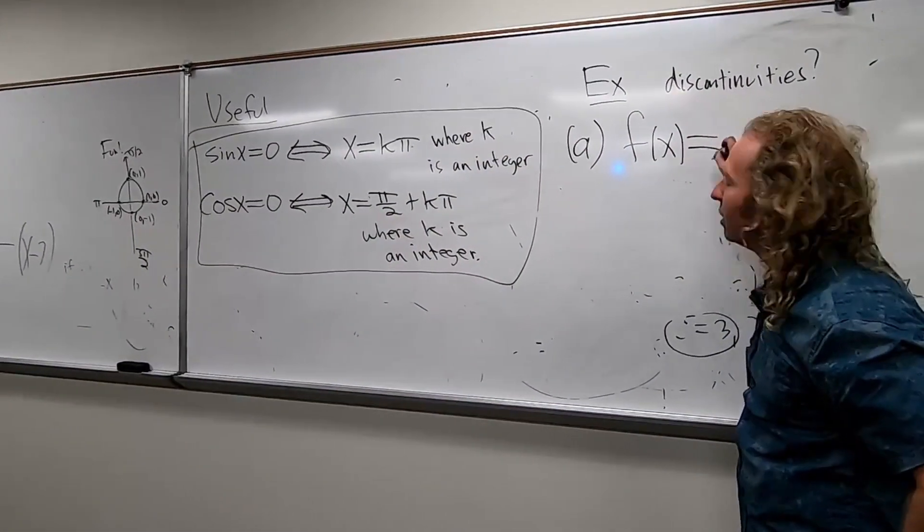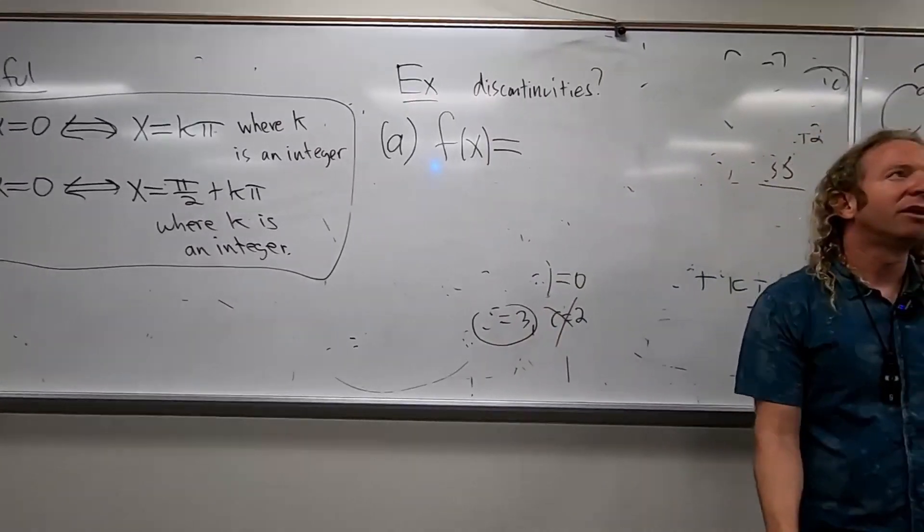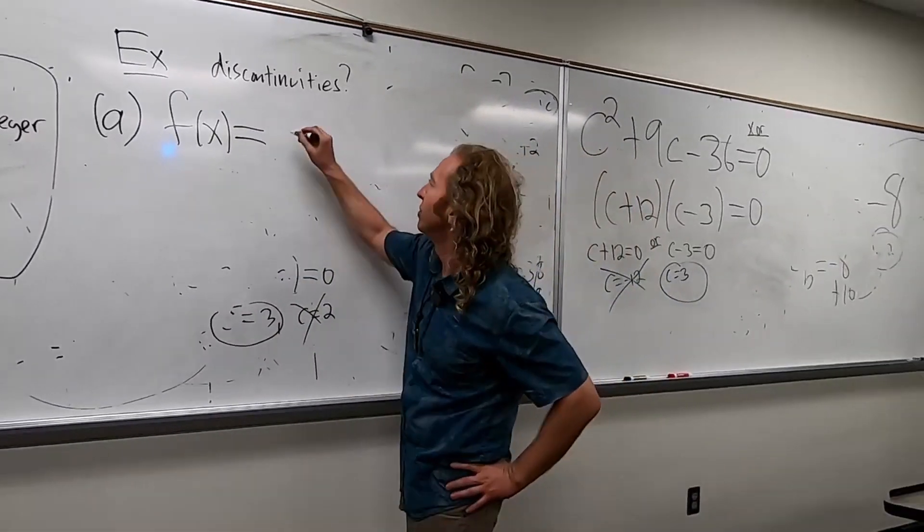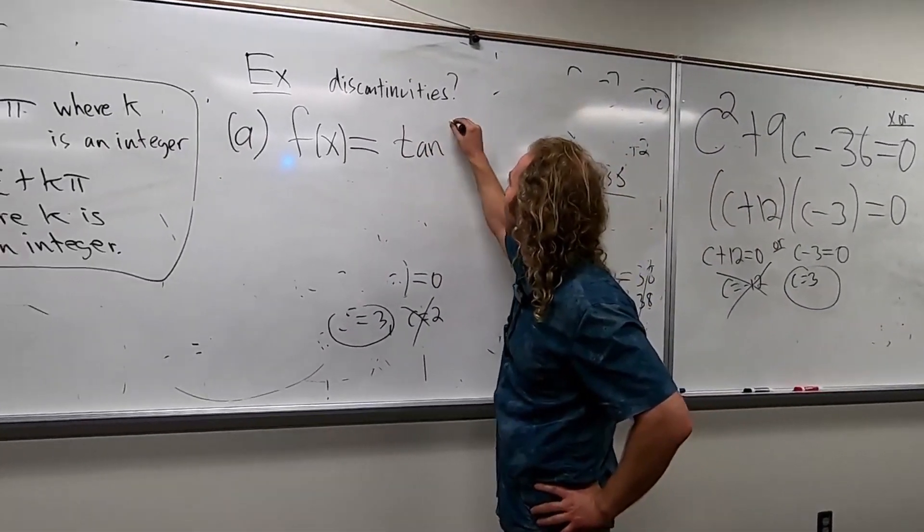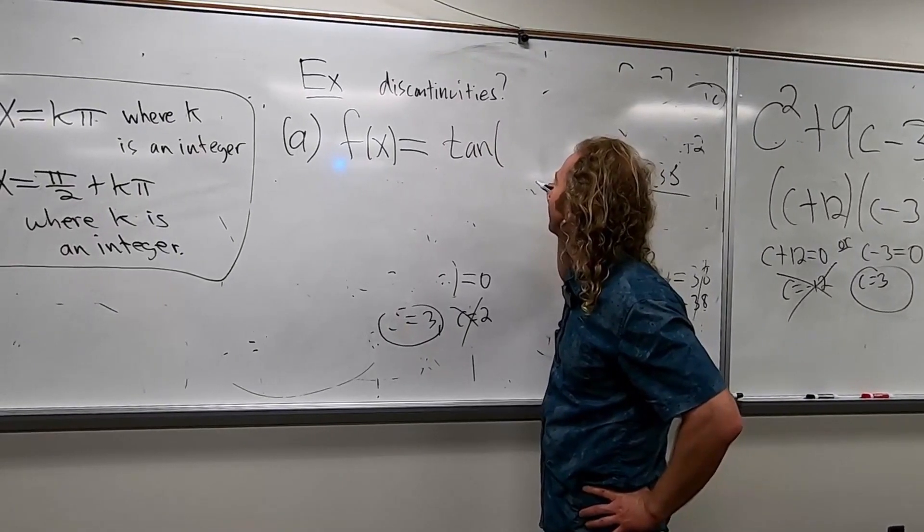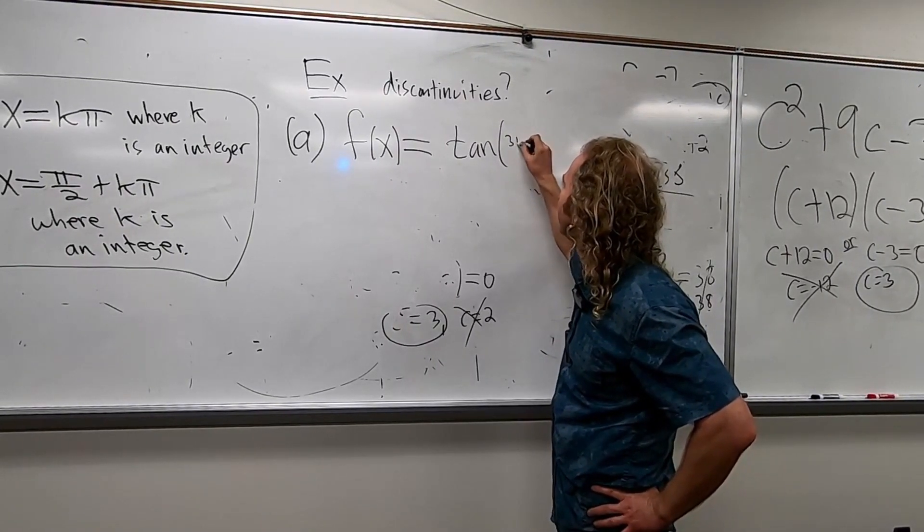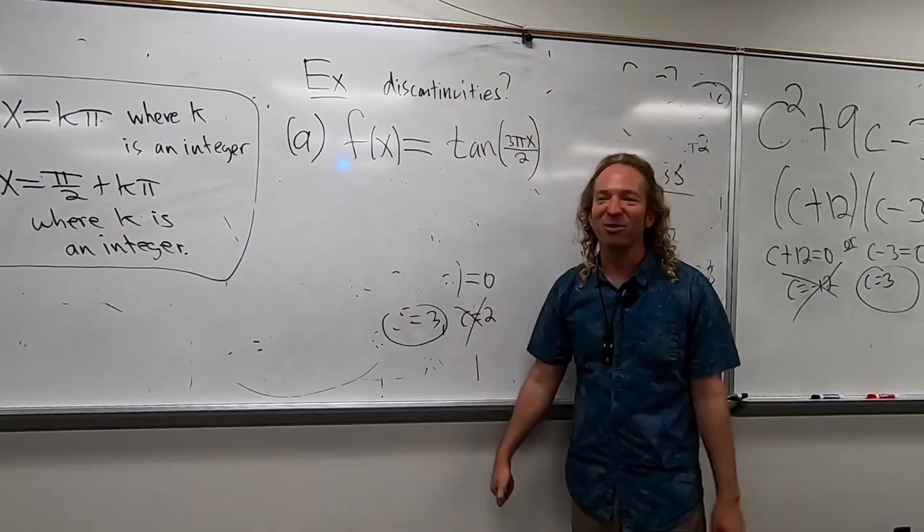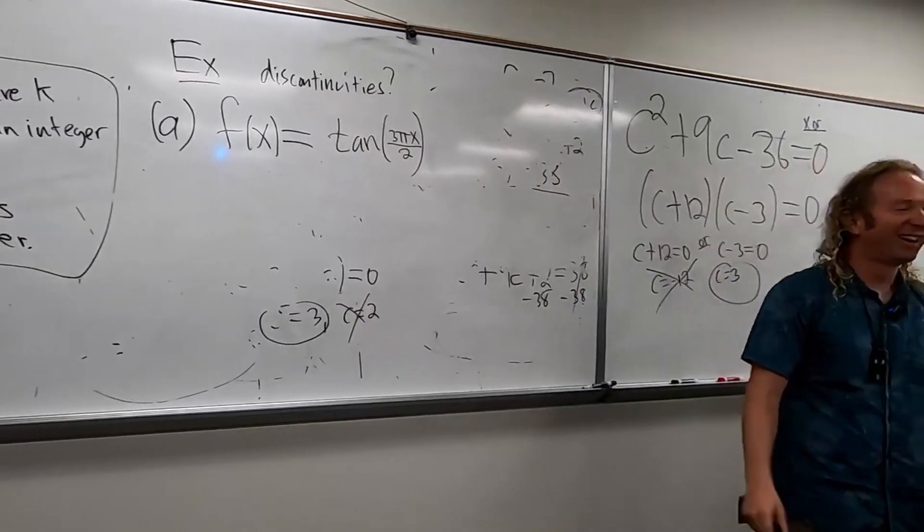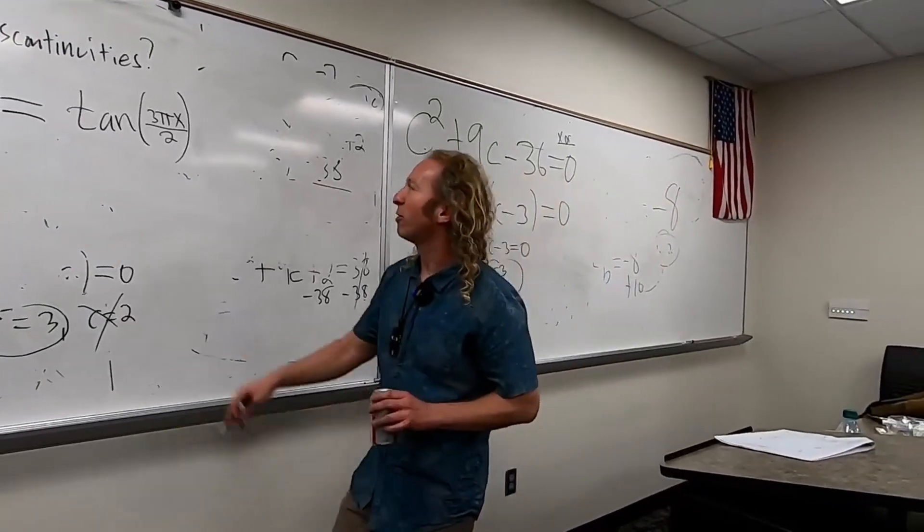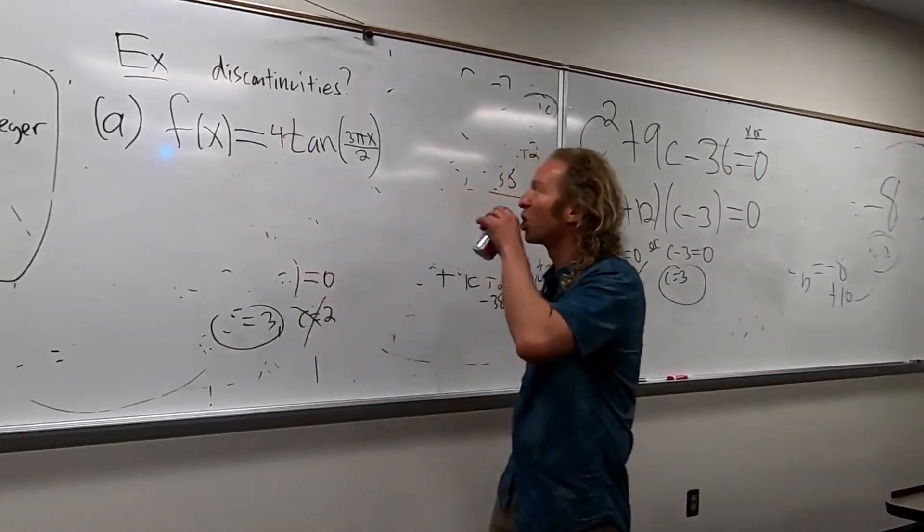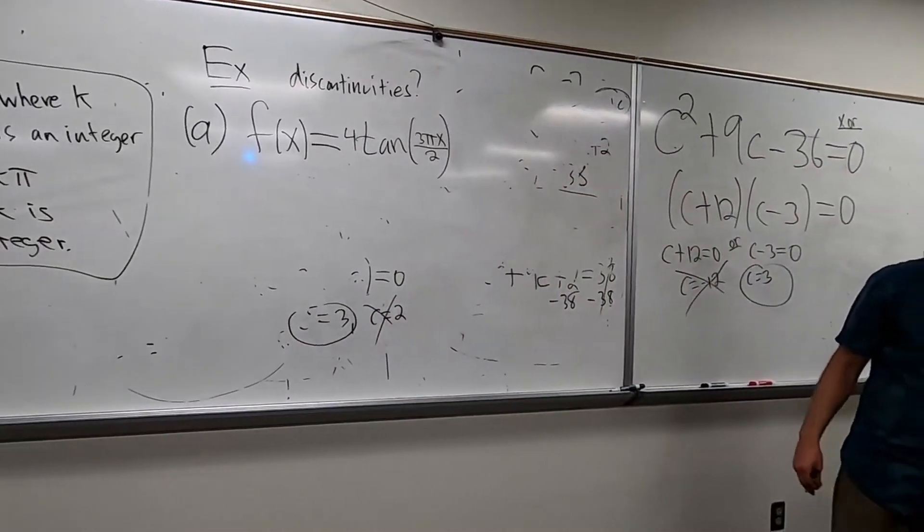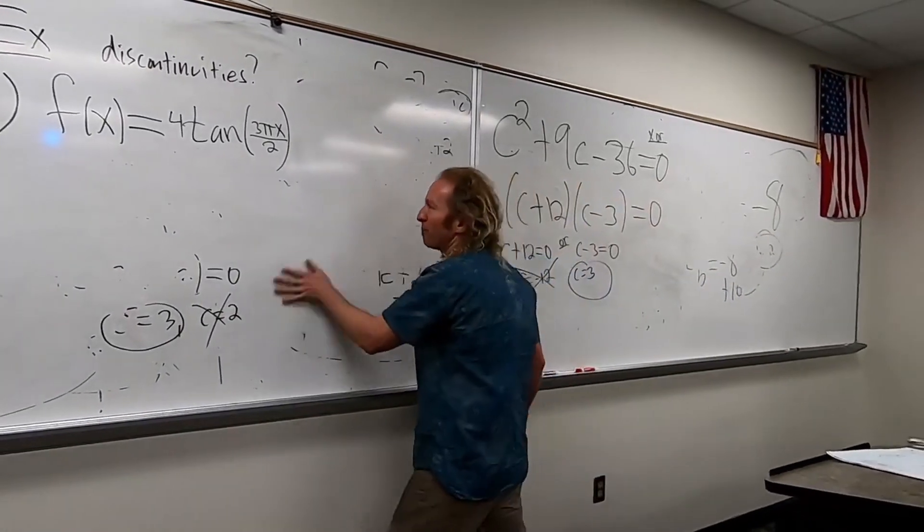f of x equals... Okay, how about this one? Tangent. Let's keep it... No, this is college. 3 pi x over 2. I'll put a 4 here, too. Game over. Make it hard. Hardest possible problem.